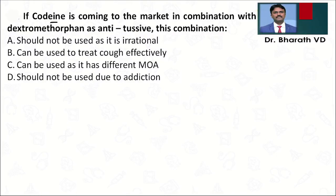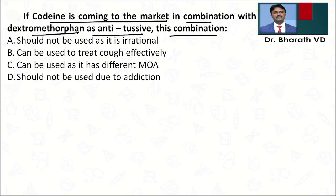Moving on to the next question: if codeine is coming to the market in combination with dextromethorphan, this combination should not be used as it is irrational, OR can be used to treat cough effectively, OR should be used as it has a different mechanism of action, OR should not be used due to addiction.